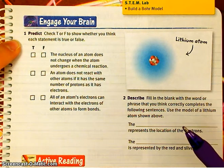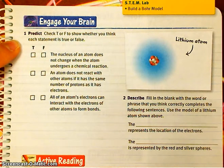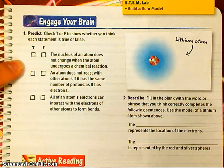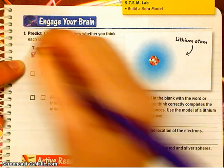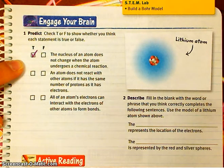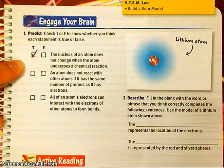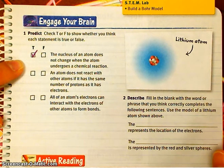All right, number one: check true or false to show whether you think each statement is true or false. The nucleus of an atom does not change when the atom undergoes a chemical reaction. True. That is super important that you understand that. Nothing happens to the nucleus in a chemical reaction. Nothing. The only thing that happens during a chemical reaction is atoms gain, lose, or share their electrons. Nothing happens to the nucleus.